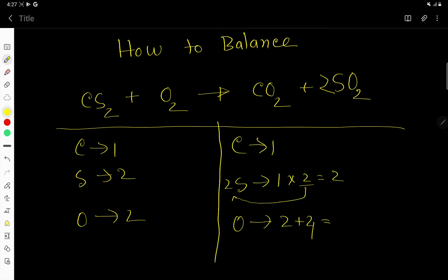So basically you are getting here 6 oxygen. So carbon 1, 1 is balanced. Sulfur 2, 2 is balanced, but oxygen here 2, here 6. So to balance the oxygen you can multiply here by 3. That gives us 6.